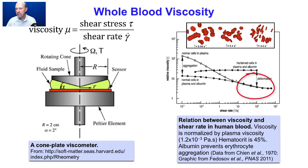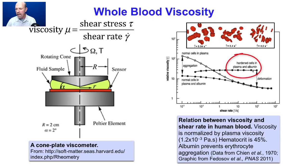At high shear rates, the decreasing apparent viscosity is due to the second property of whole blood: red blood cells are deformable. When red blood cells are hardened, the viscosity is higher and does not decrease with increasing shear rate.